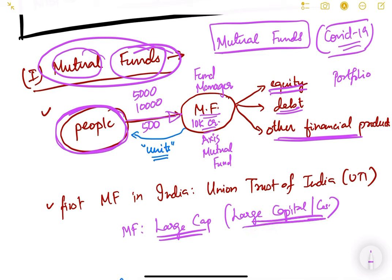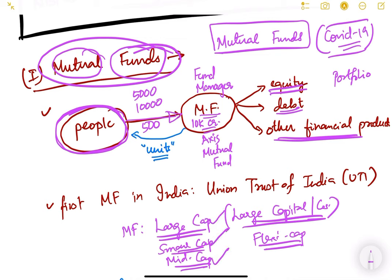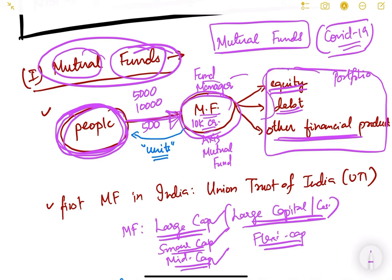For example, a large cap mutual fund invests only in large capital companies like Tata and Reliance. There can also be small cap funds investing in small companies and startups, mid cap funds, or flexi cap funds which are flexible and can invest in large, mid, or small cap. The portfolio is declared to the people so they are secure that their money is being invested safely.